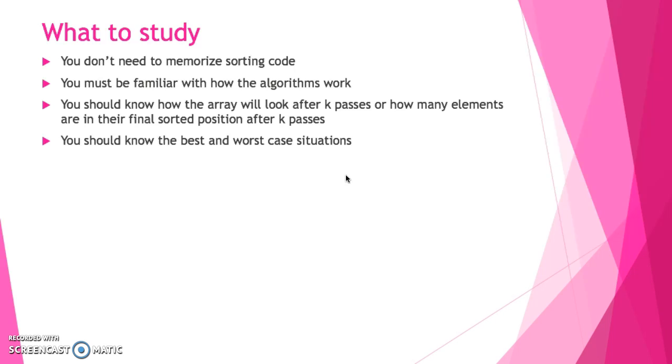You might also see a multiple choice question where it's a selection sort, for example, and they say this is the code, but it's not working the way that it should. What's wrong with it? What do I need to do to fix it? So in this case, again, you don't have to memorize the code, but you need to know the algorithms well enough to be able to fix it so that it behaves the way that a selection sort should. The third bullet point here says you should know how the array will look after k passes or how many elements are in their final sorted position after k passes. This is an example of, if we give you an array and we tell you it was sorted using this algorithm, how would it look? So in this case, they won't even give you the code. You have to understand the process well enough to be able to think like a computer and figure out how it would look after three passes or four passes without having the code to trace.